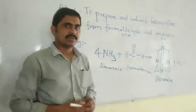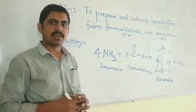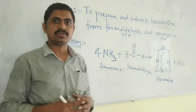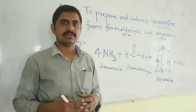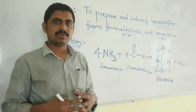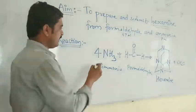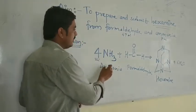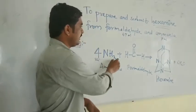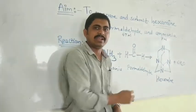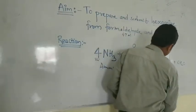This practical is very simple. It is a condensation reaction, where two molecules come together to form a single molecule. Formaldehyde and ammonia come together to form hexamine. In this reaction, four molecules of ammonia react with six molecules of formaldehyde to give hexamine.